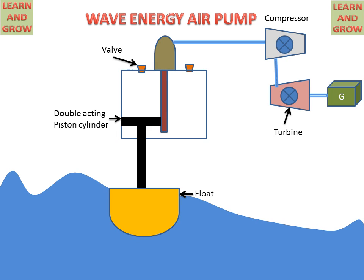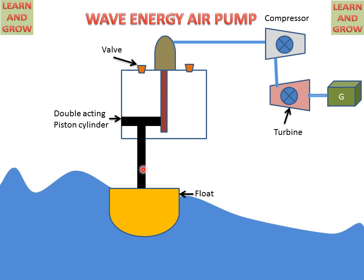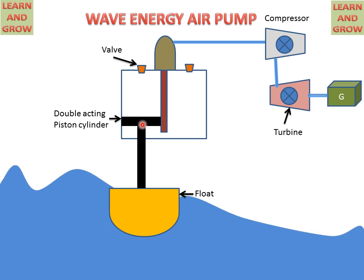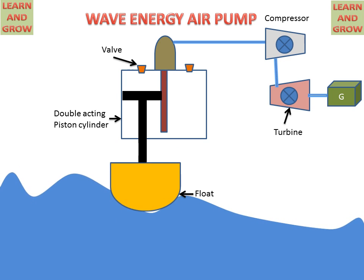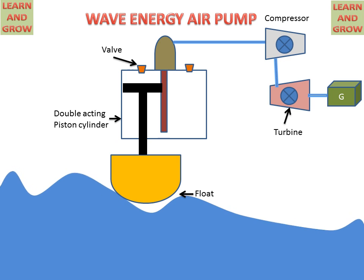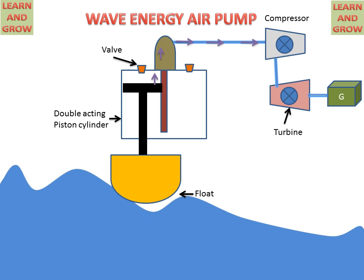Now we see the working of the wave energy air pump. When waves cause the float to rise, the float moves in the upward direction. Because the float is connected to the piston via the piston rod, the piston moves upward inside the cylinder. By this upward movement of the piston, air goes to the discharge valve and reaches the compressor, where it is compressed or stored.